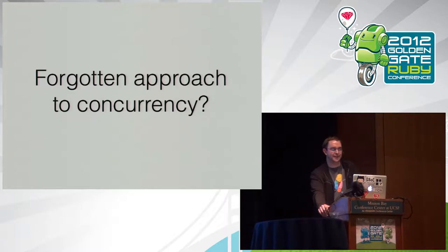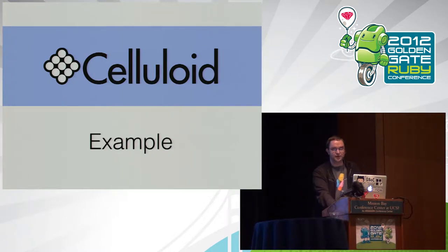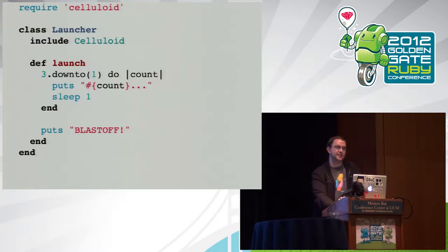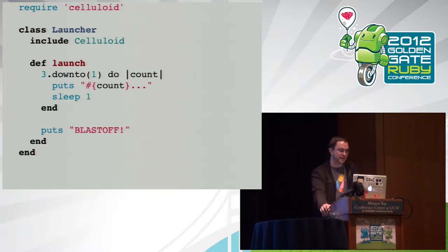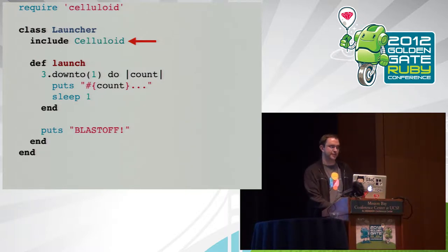I'm trying to single-handedly revitalize it, and I'm getting a lot of good feedback. People are saying Celluloid made it so simple to write concurrent programs. I'd like to show you today the basics of Celluloid and how to use it. Here is an example — this actually comes out of a Railscast on Celluloid; I'd strongly recommend you watch it because he covers stuff I don't. We basically have this thing that looks like a normal Ruby class, except you include Celluloid. And then we've got this launch method that does a little countdown and blast off.